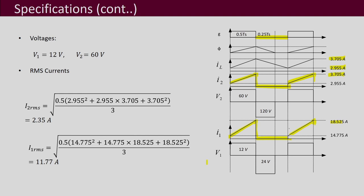We calculate the RMS values of the primary and secondary current waveforms using standard equations. The secondary RMS current turns out to be 2.35 A and the primary RMS current turns out to be 11.77 A.